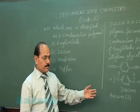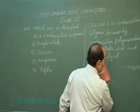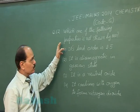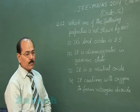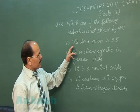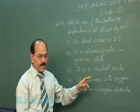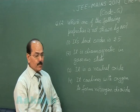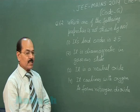We will take up the next question, that is question number 62. Question number 62 says: which one of the following properties is not shown by NO, that is nitric oxide? Option 1: its bond order is 2.5. Option 2: it is diamagnetic in gaseous state. Option 3: it is a neutral oxide. Option 4: it combines with oxygen to form nitrogen dioxide.